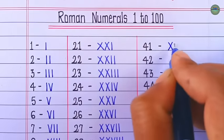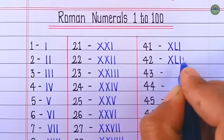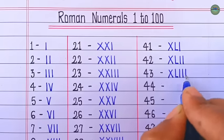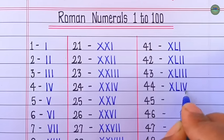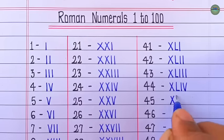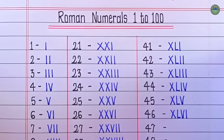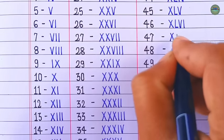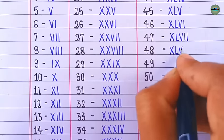41 is XLI, 42 is XLII, 43 is XLIII, 44 is XLIV, 45 is XLV, 46 is XLVI, 47 is XLVII, 48 is XLVIII.